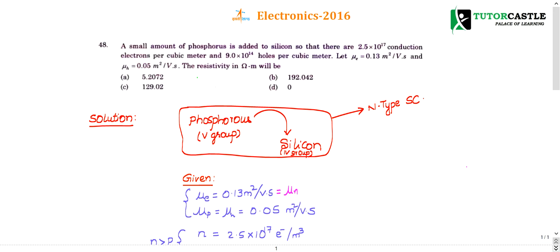Question number 48: A small amount of phosphorus is added to silicon, meaning a fifth group element is added to a fourth group element. This forms an n-type semiconductor, so there are 2.5×10^17 conduction electrons per meter cube and 9×10^14 holes per meter cube.